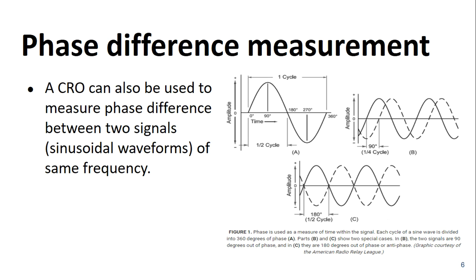Figure B represents two signals which are out of phase by 90 degrees. That means there is a phase difference of 90 degrees between the two sinusoidal waves. And in figure C, we can see that there is a phase difference of 180 degrees between the two applied signals.